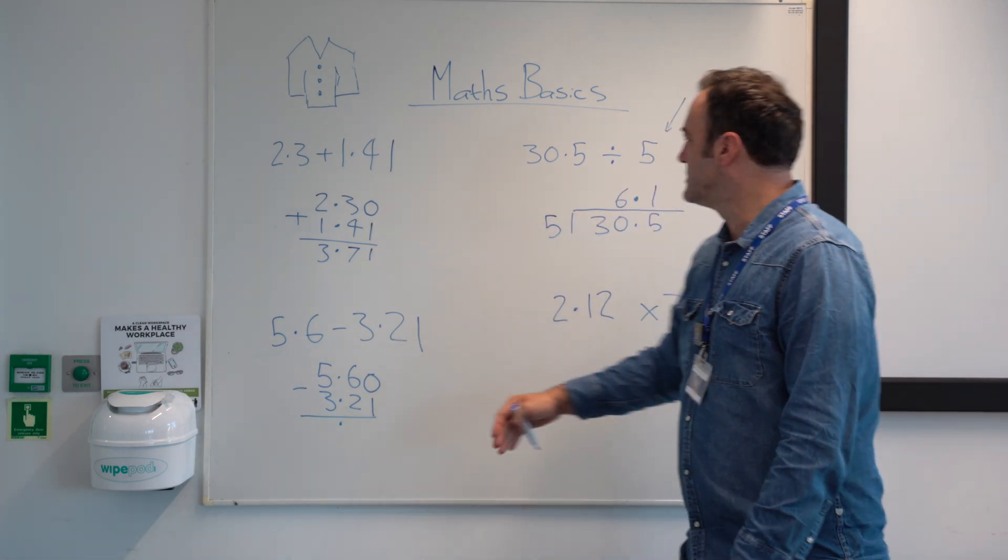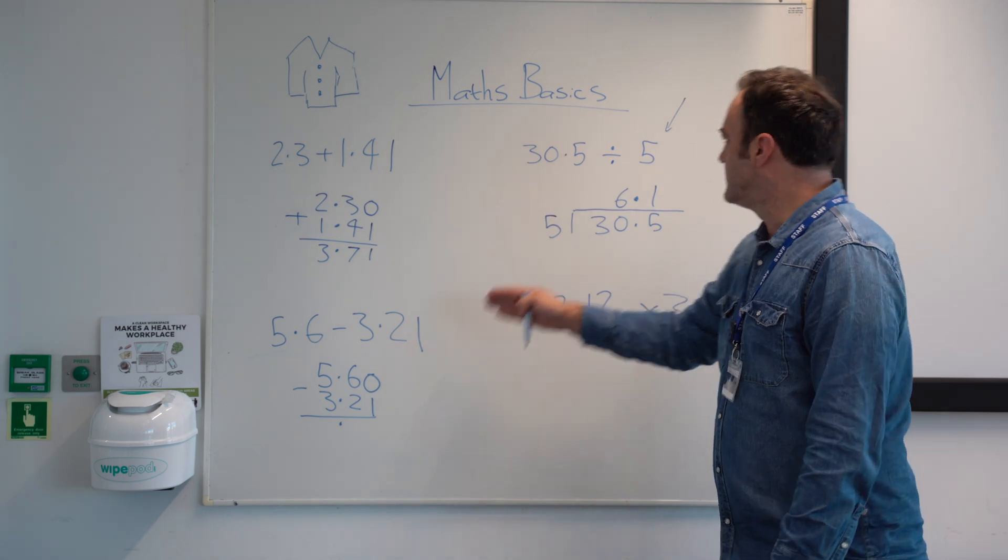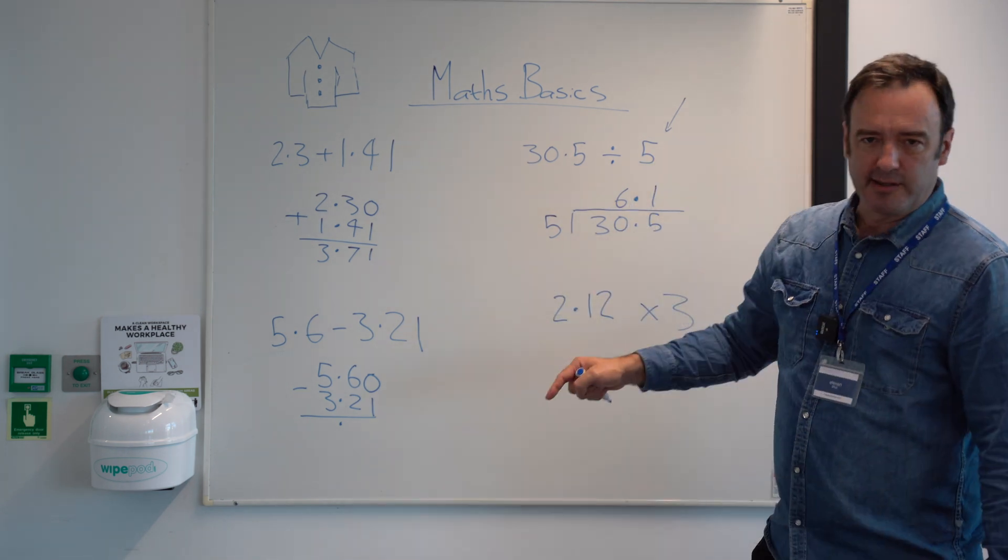So shirt button, shirt button, shirt buttons. Line them up using the dots. One on the right goes outside in the cold.